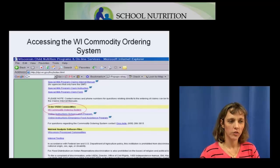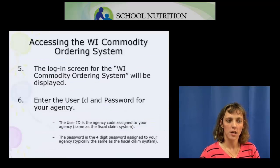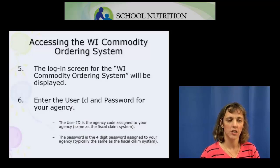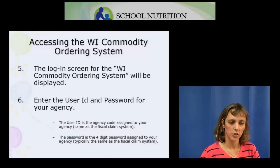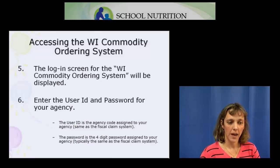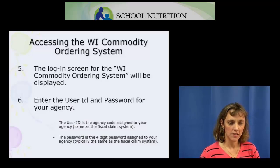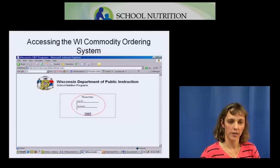This screen shows what that looks like in the Internet. After you've clicked on the Wisconsin Commodity Ordering System link, you will be taken to the login screen. It is specific to each agency, so you will need to enter your user ID and password. The user ID is the agency code assigned to you for the school lunch program — the same one used in the fiscal claim system. The password is the four-digit password assigned to your agency.